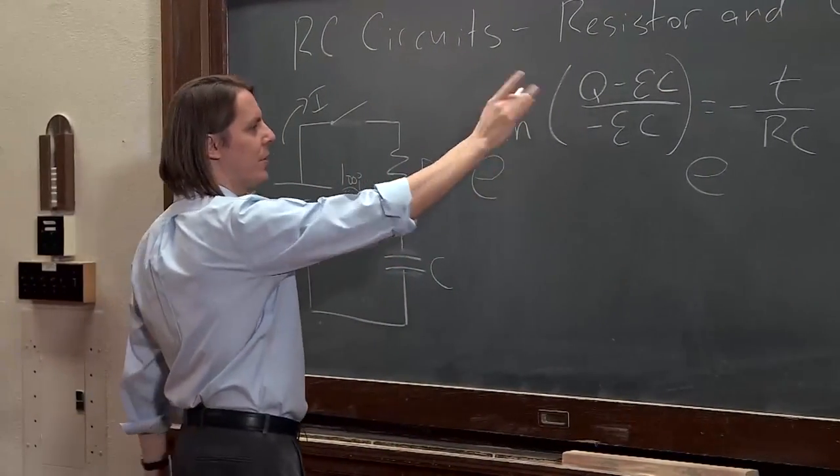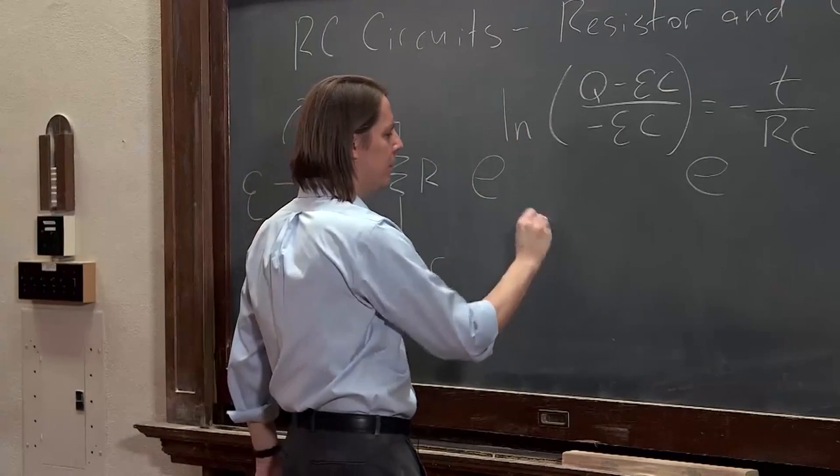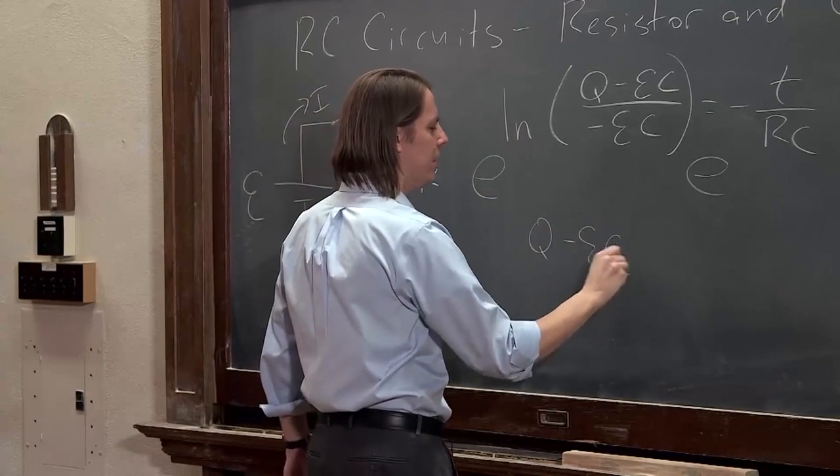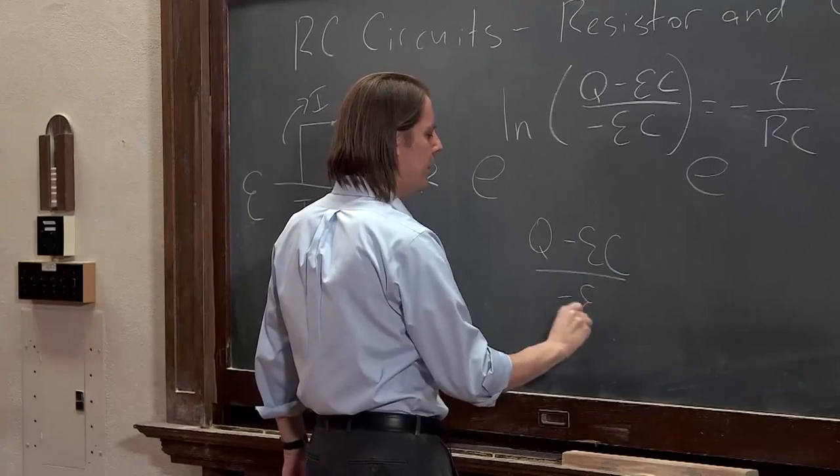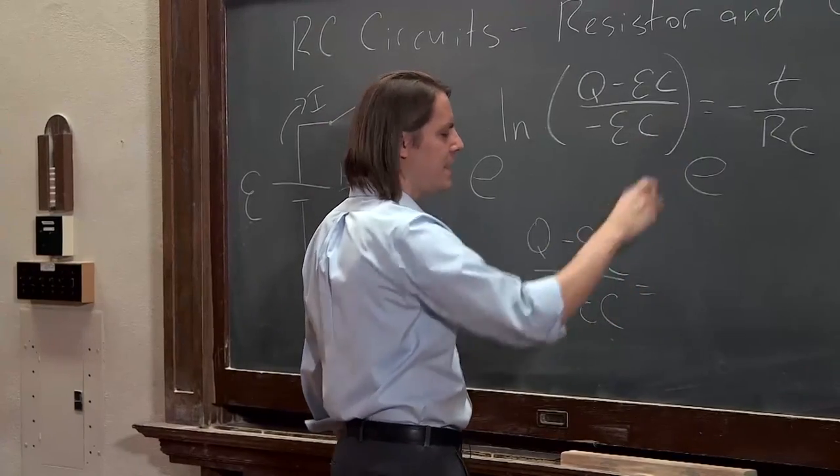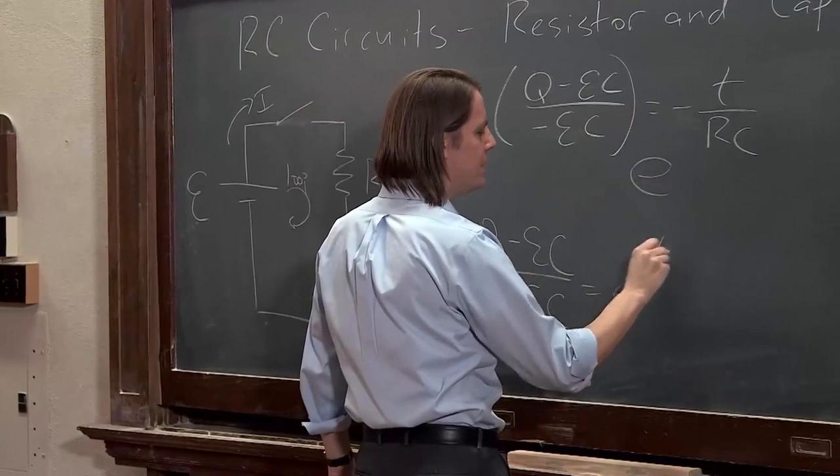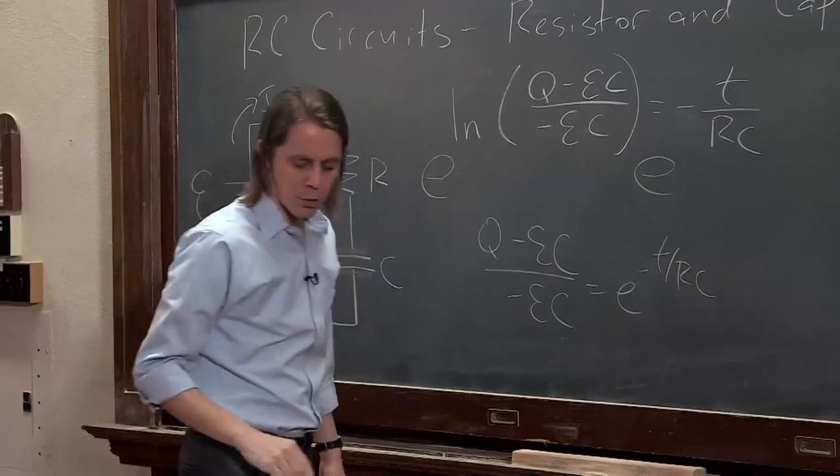So Q minus the EMF times C over minus the EMF times C is E to the minus T over RC.